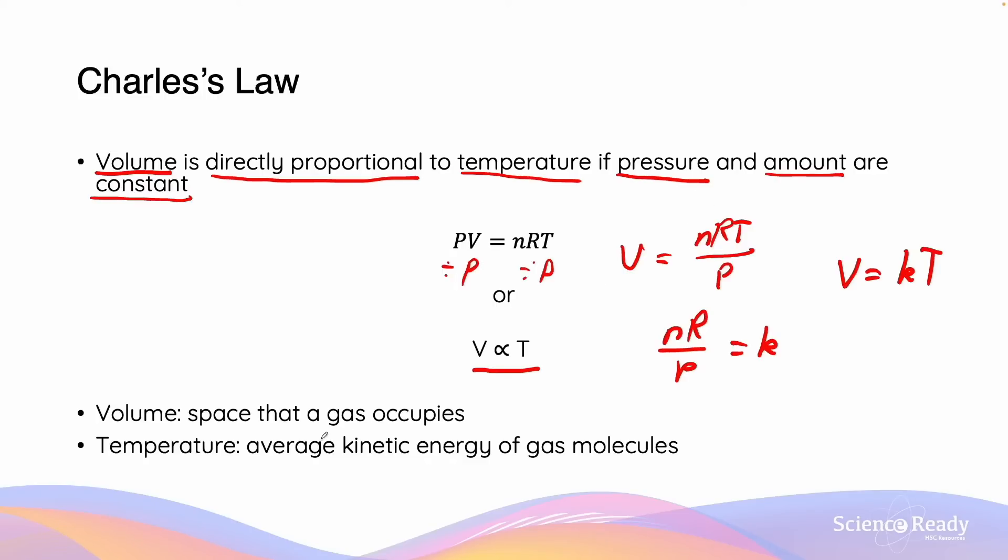In the context of Charles's law, we can define volume as the space that is occupied by a gas, and temperature as the average kinetic energy of gas molecules that are in the system.